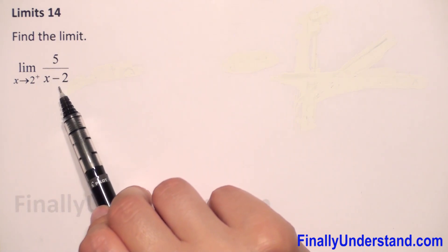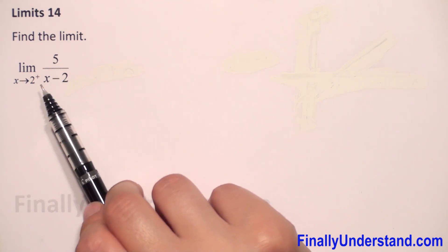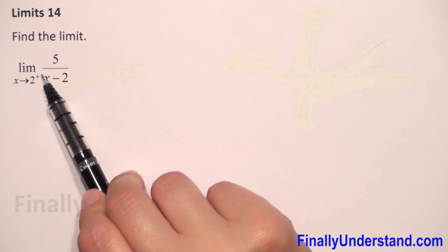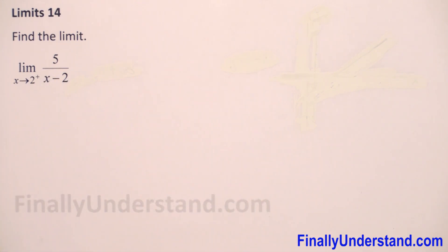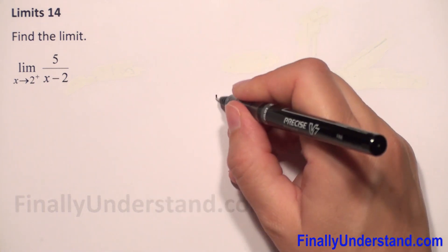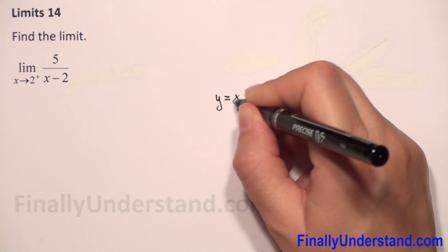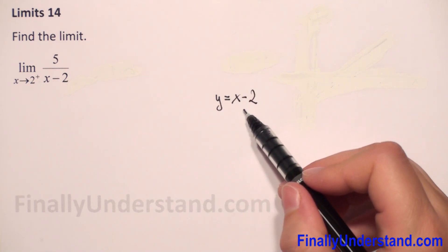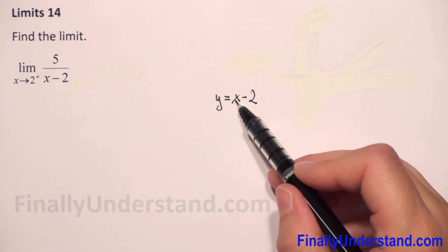We cannot have 0 in the denominator, so we cannot do this next step. Because we have a right limit, when we have right or left limits we will draw the graph of the function which is in the denominator. In the denominator we have the function x minus 2, so this is a linear function. The graph is a straight line with positive coefficient, which means this line increases.